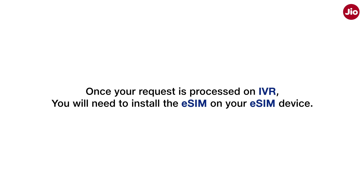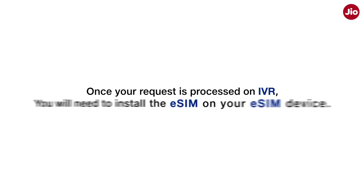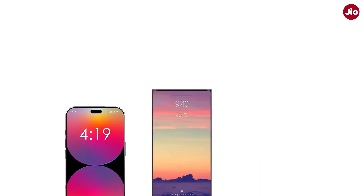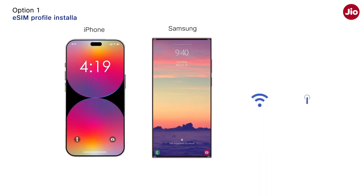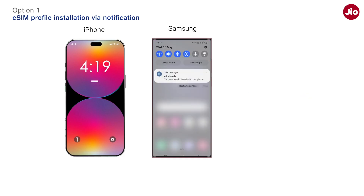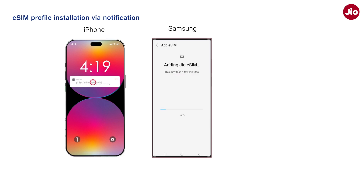Once your request is processed on IVR, you will need to install the eSIM on your eSIM device. Connect your eSIM device with Wi-Fi or Hotspot. For Apple and Samsung devices, simply tap on the eSIM profile received on the device and follow the steps to install the eSIM.